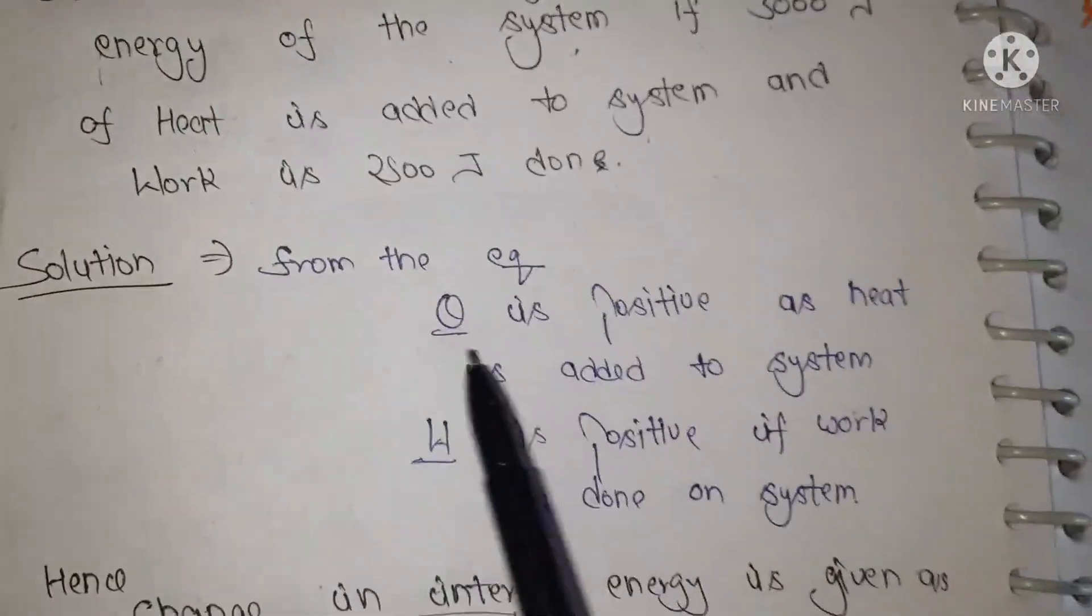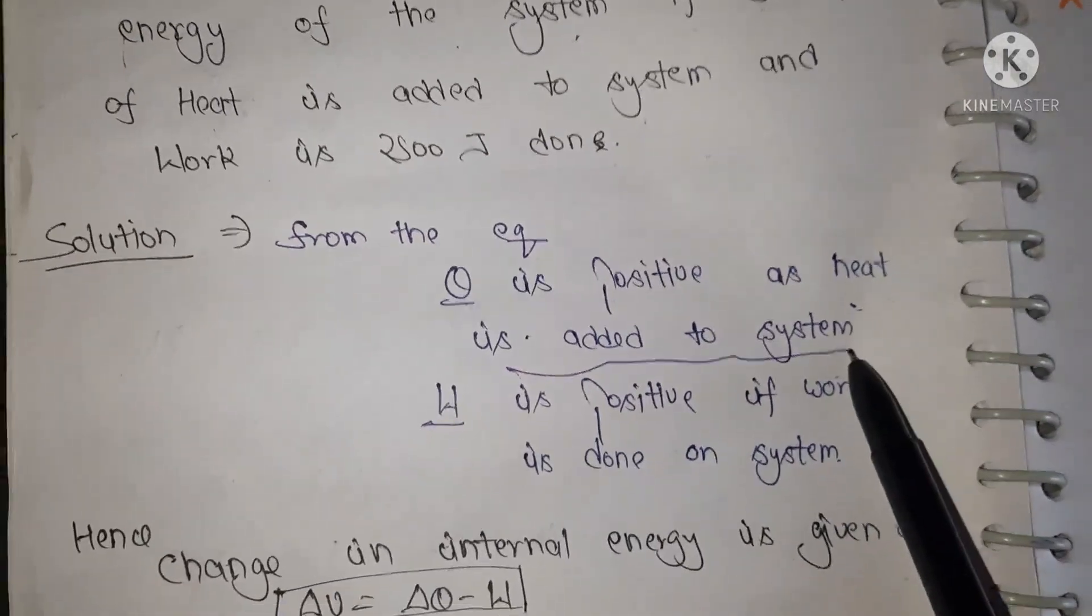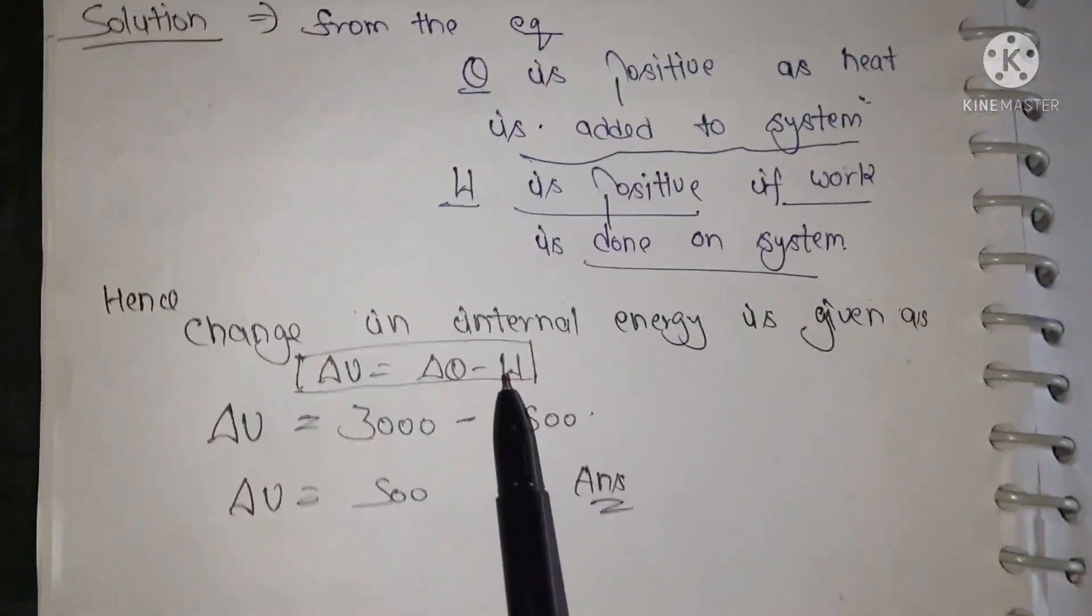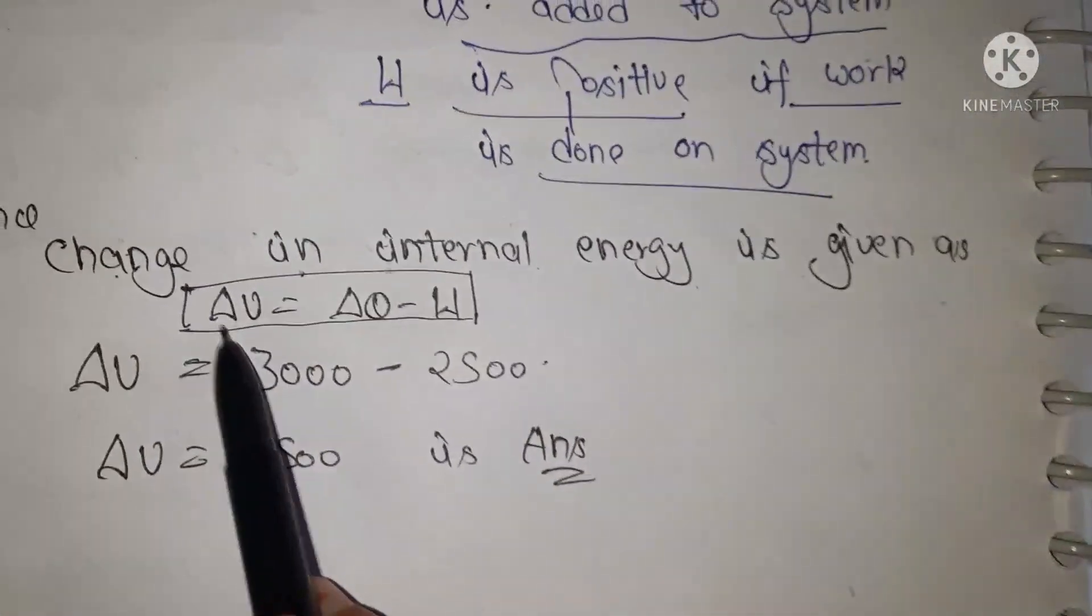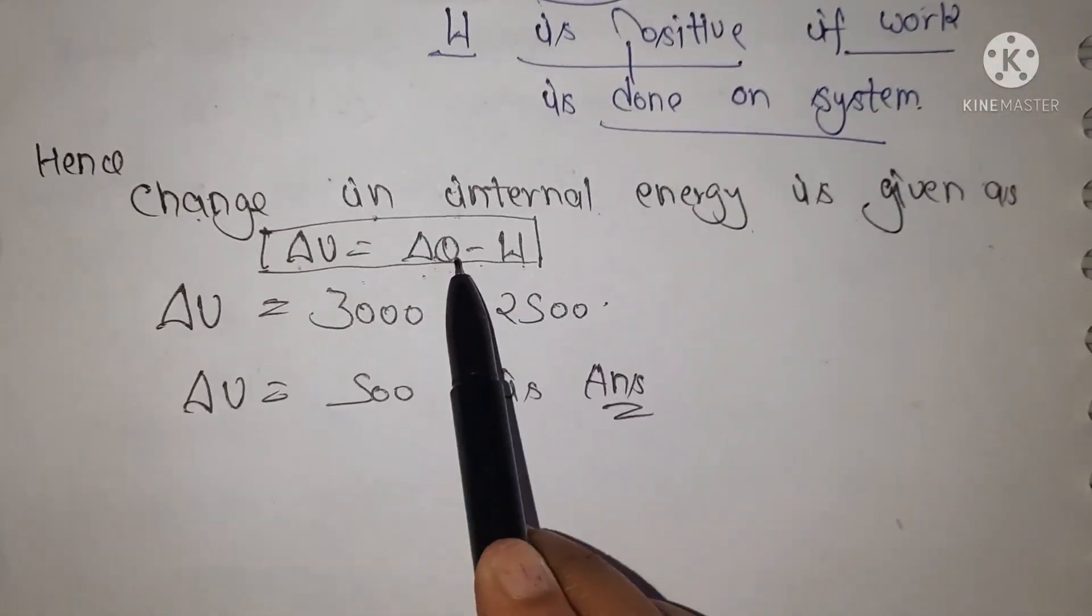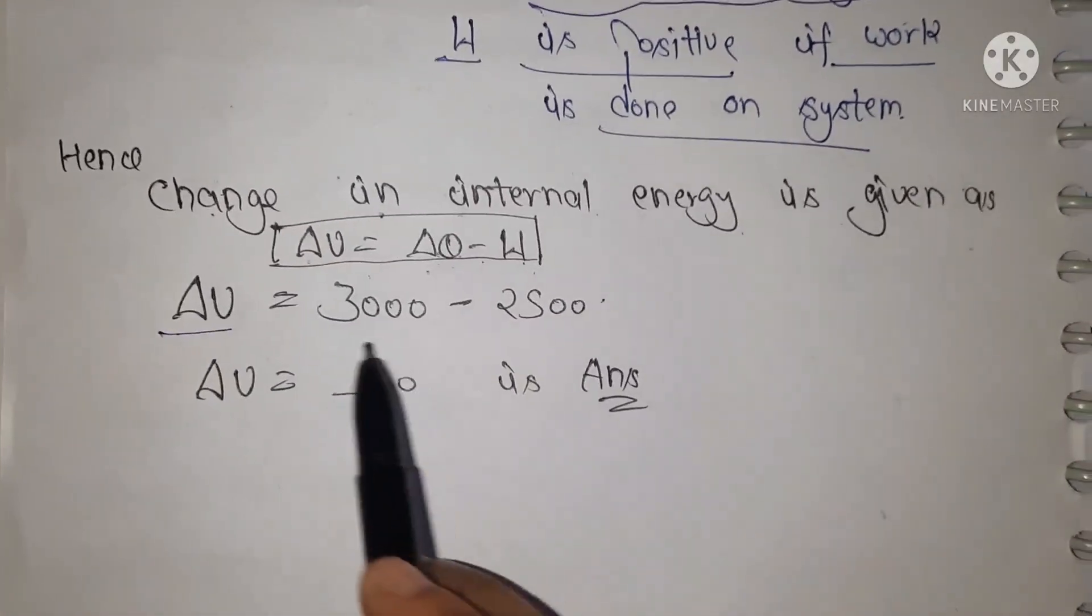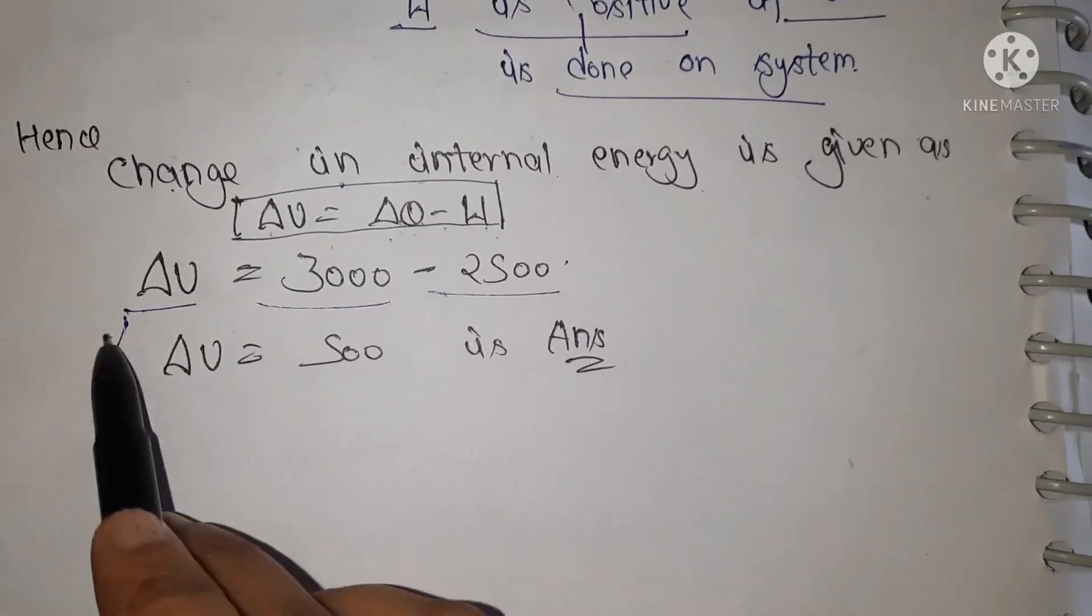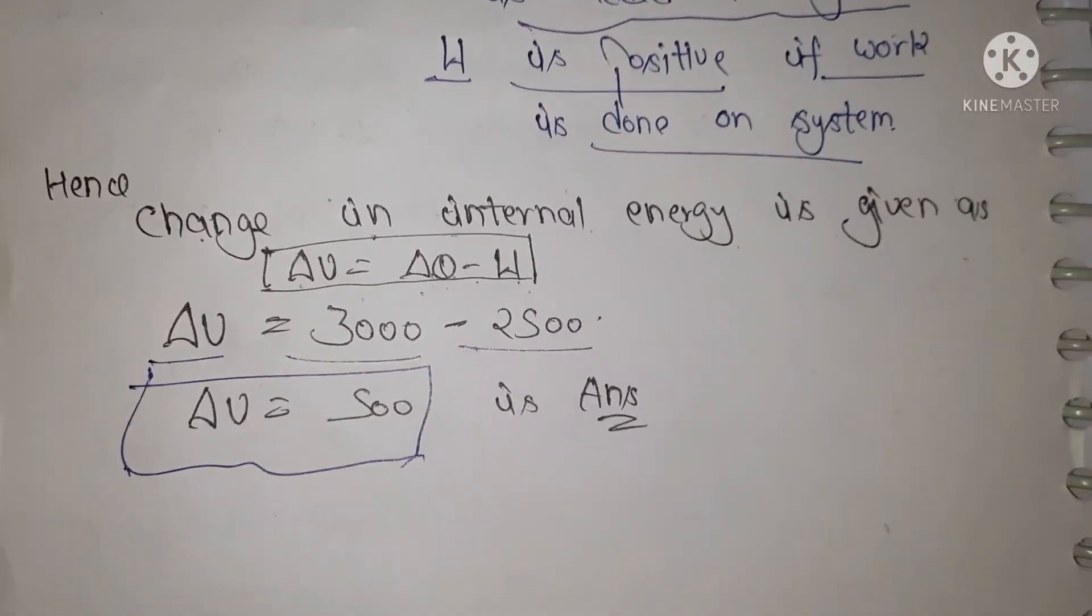From the solution, from the equation we know Q is positive because heat is added to system. Second, W is positive because work is done on the system. From the equation we can say the change in internal energy is given as delta U is equal to delta Q minus W. Q is the heat which is given to the system and W is the work. So delta U is equal to 3000 minus 2500 and we will get our answer which is 500. So this is the main topic of first law of thermodynamics.